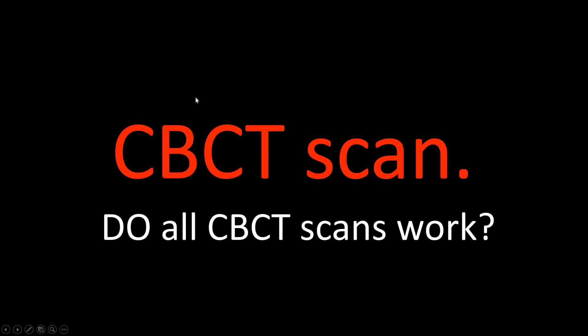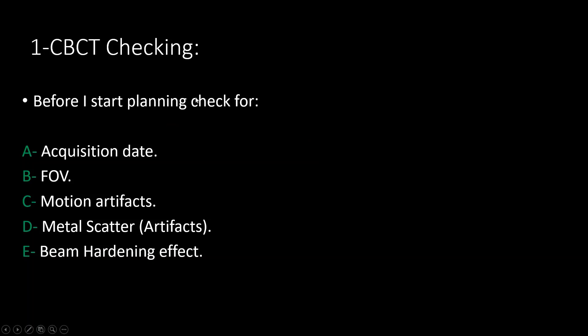But what are the criteria for the CBCT scan? Do all CBCT scans work? The answer is no. We have certain criteria to check before using a CBCT for treatment planning. Number one is acquisition date, number two is FOV, number three is motion artifacts, number four is metal scatter, and number five is beam hardening. Let's talk in detail about each of those five criteria.